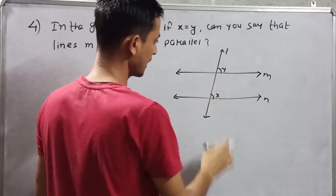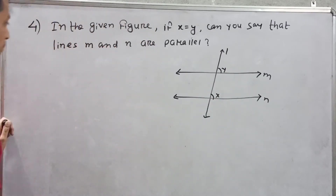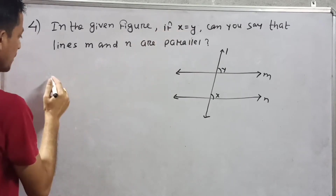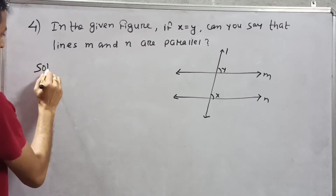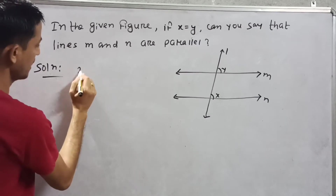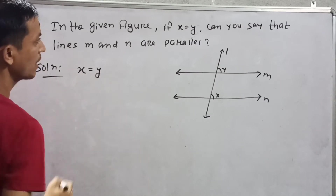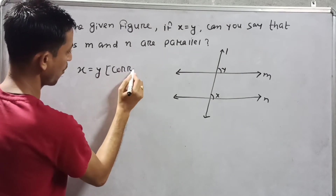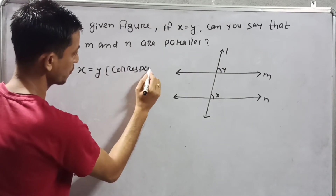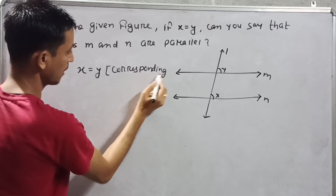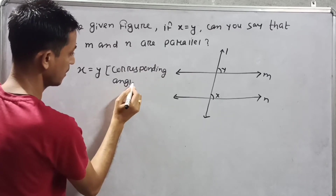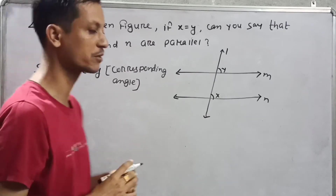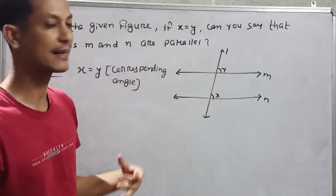Here you can see two corresponding angles. X is equal to Y is given — that is the corresponding angle condition. One condition in a transversal is that corresponding angles are equal.